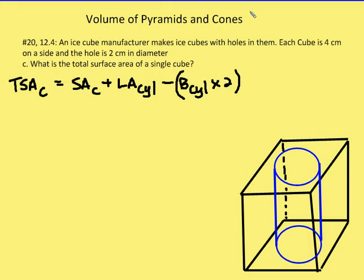Part 3 asks for the total surface area of a single ice cube. We take the total surface area of the cube itself, add the lateral area (the inside of the cylinder), and then subtract the two circular openings — since those are open areas that we've already counted in the cube's face area but are actually holes.